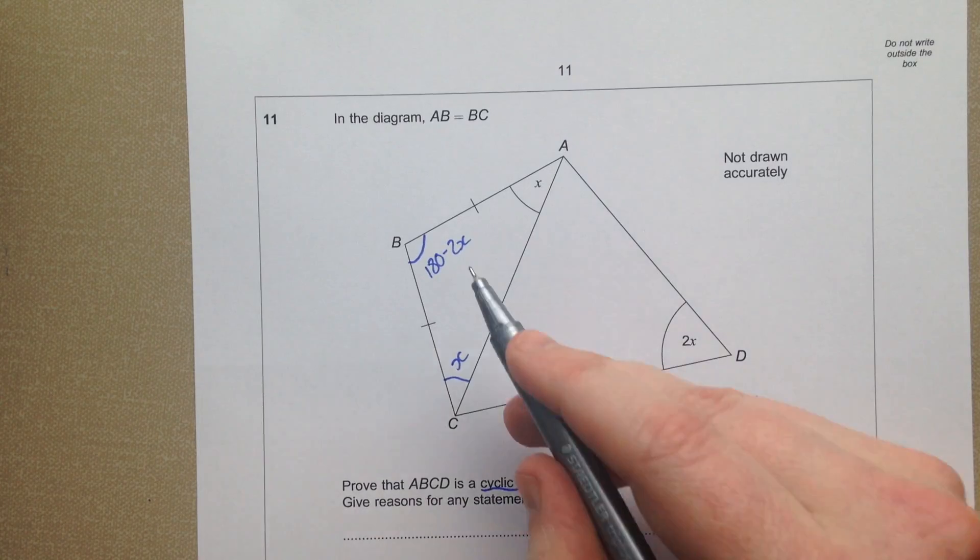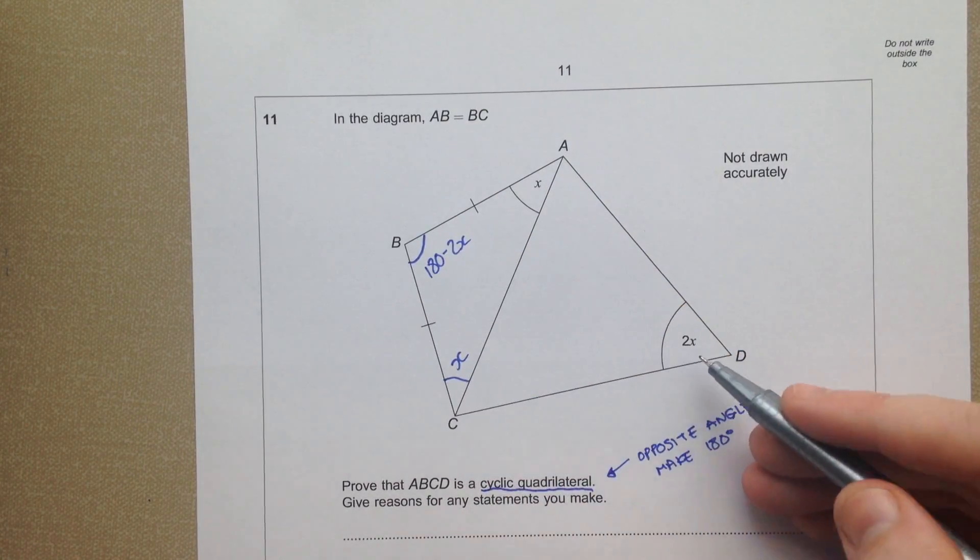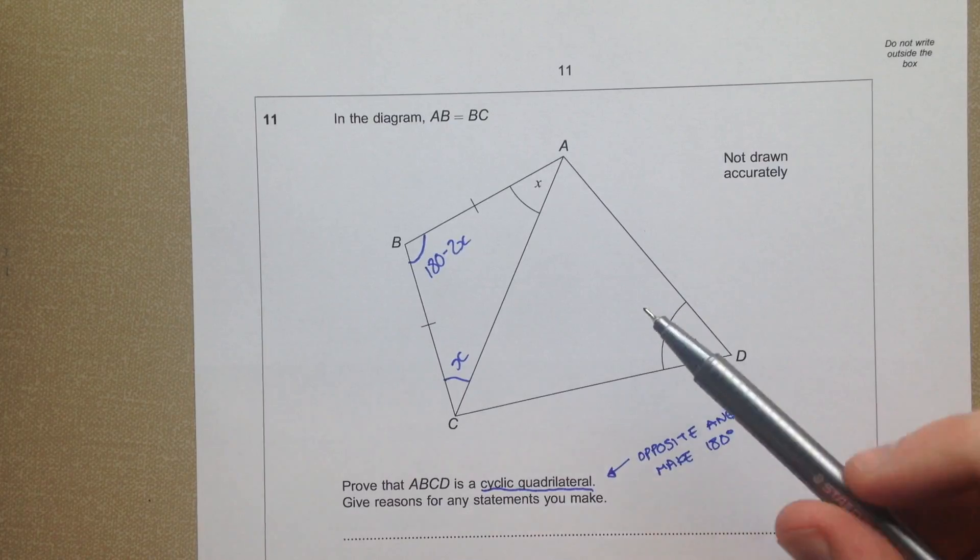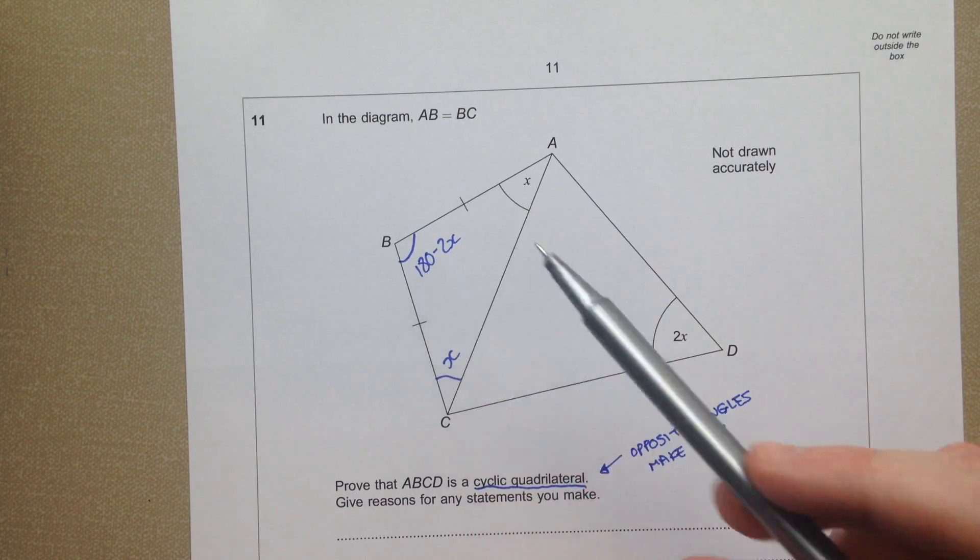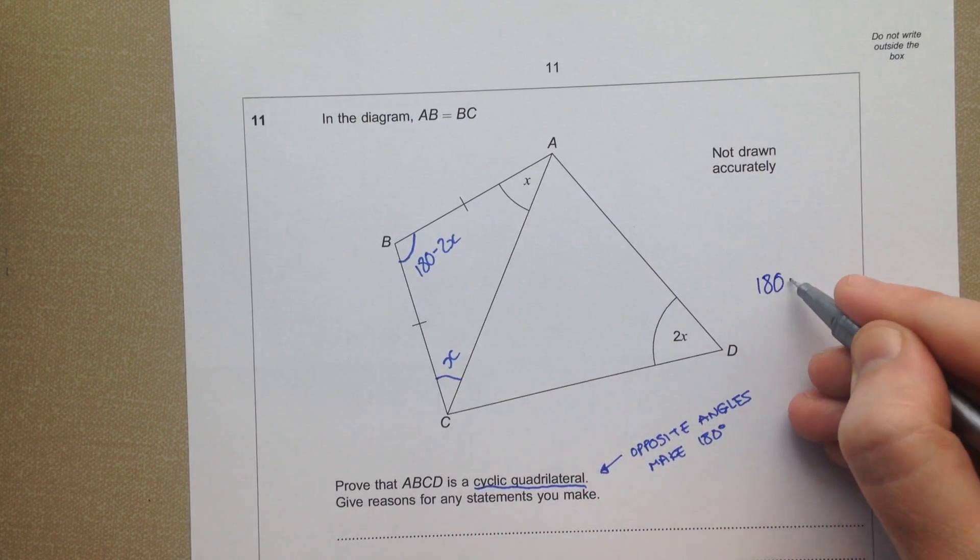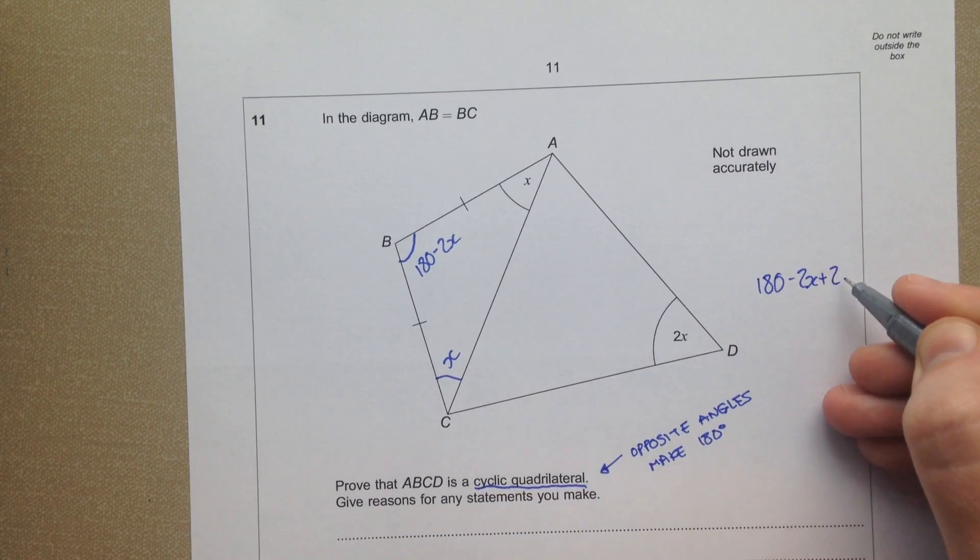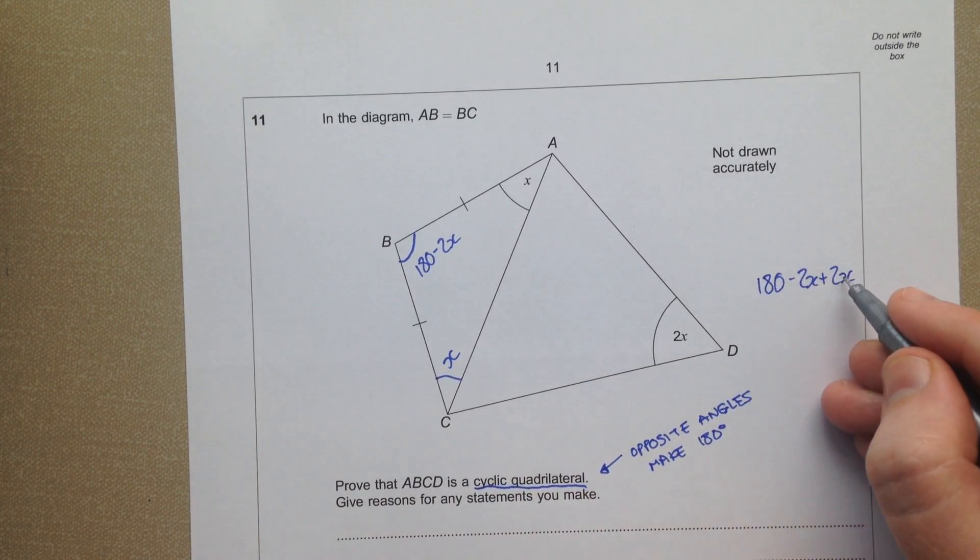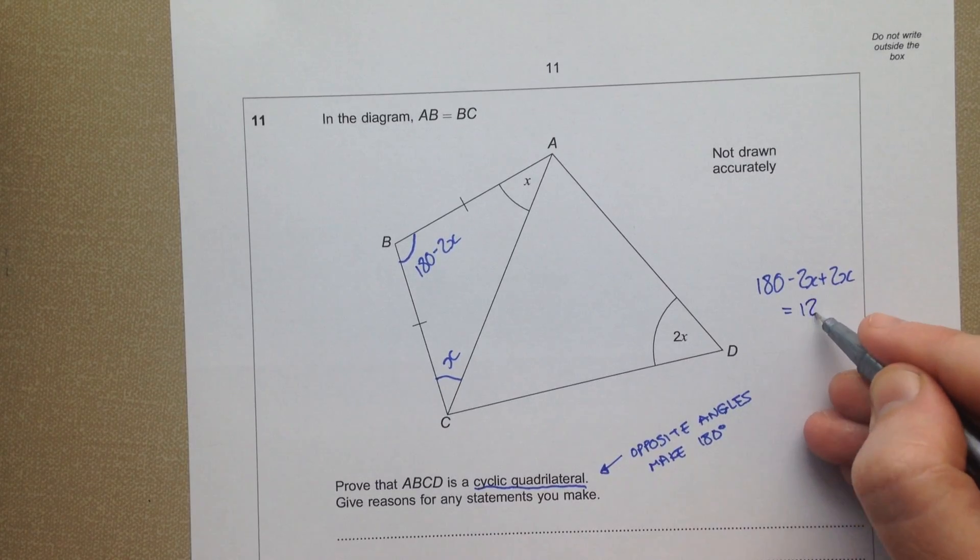Now opposite angles—this is the two opposite angles in that cyclic quadrilateral. 180 take away 2x plus the 2x. Well that negative 2x and positive 2x cancel out and give you 180.